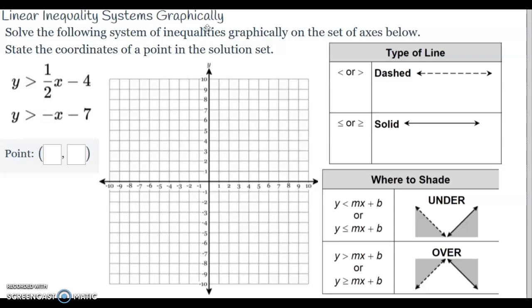Let's take a look at this first example. Here I've got y is greater than 1/2 x minus 4. I'm going to regularly graph it. I go to the y-intercept at negative 4, and then I've got my slope which is 1/2, so I'll go up 1 and over 2, and then I'm getting ready to draw my line.